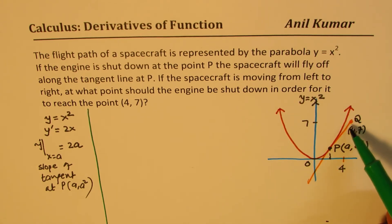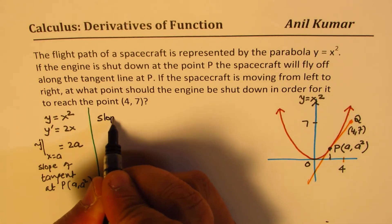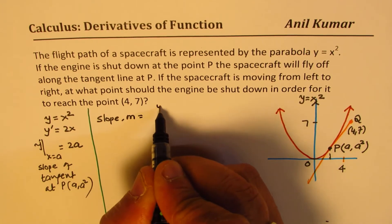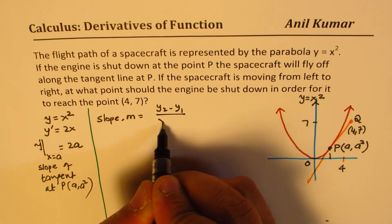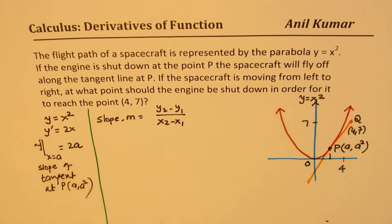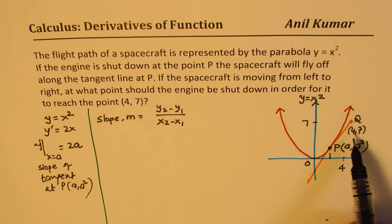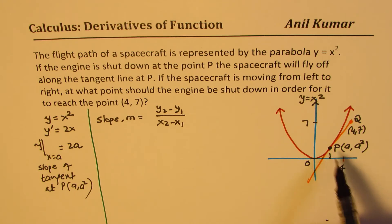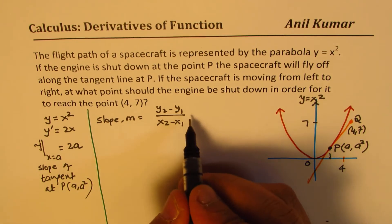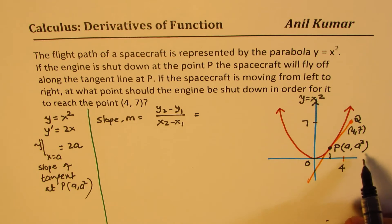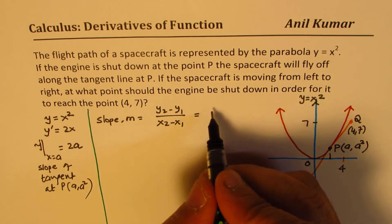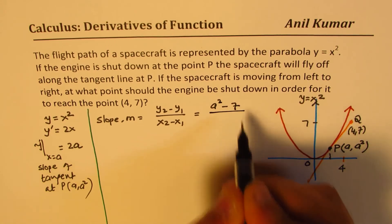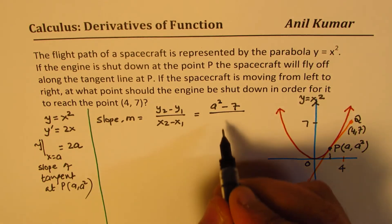Now, you can also find slope between P and Q using what you already know, which is slope M is y2 minus y1 over x2 minus x1. Now, in this case, (4, 7) is the point where you want to reach. (a, a squared) is the point where the engine has been shut out. So it is equal to a squared minus 7 over a minus 4.